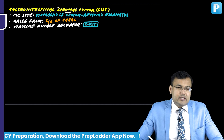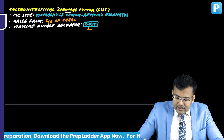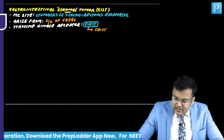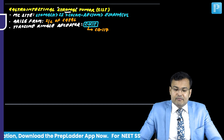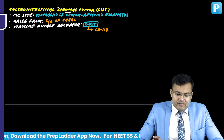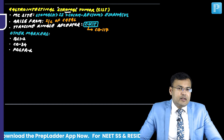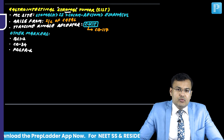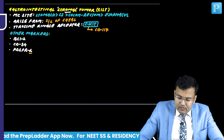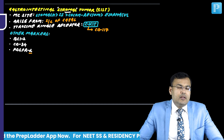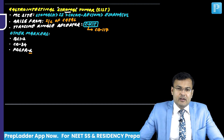The marker for c-kit, which is frequently asked, is CD117. Apart from CD117, other markers include BCL2, CD34, and PDGFR-alpha (platelet derived growth factor receptor alpha).